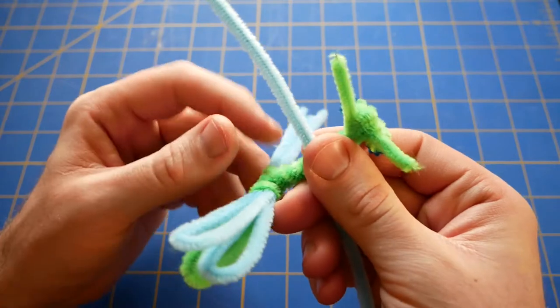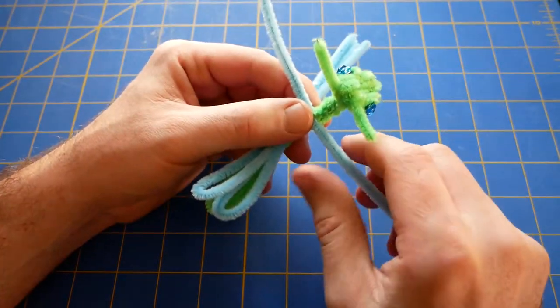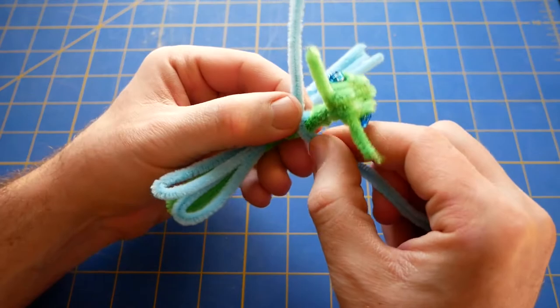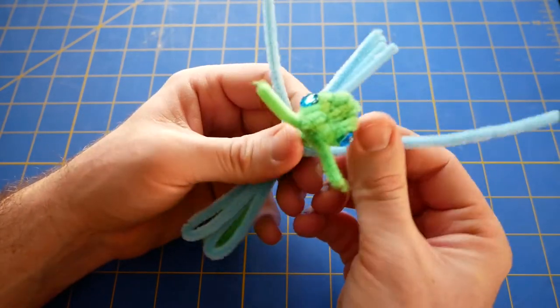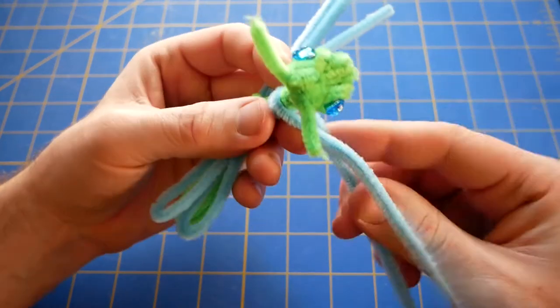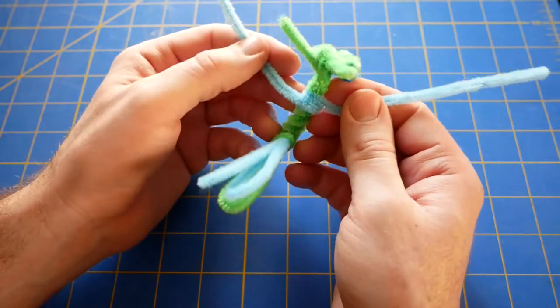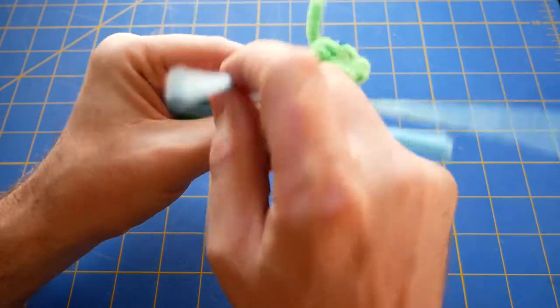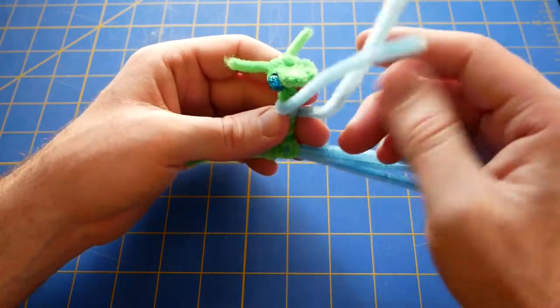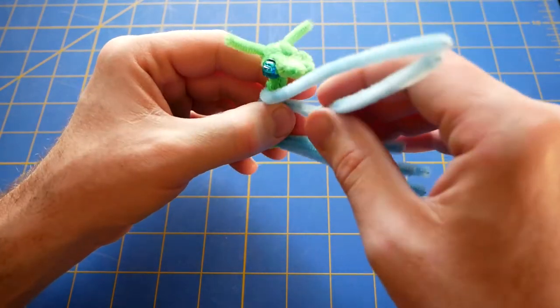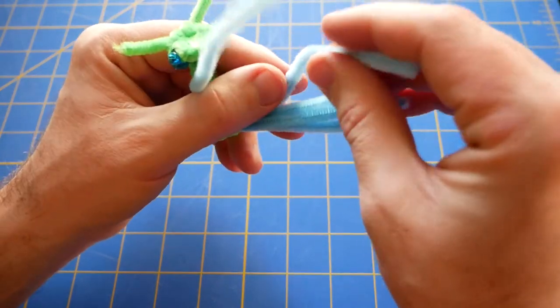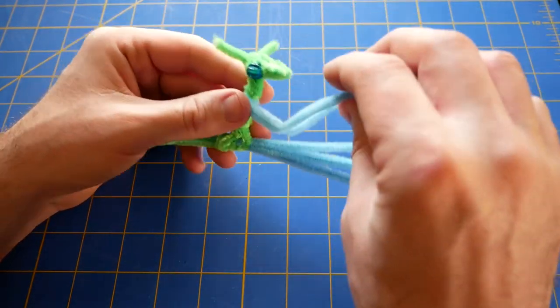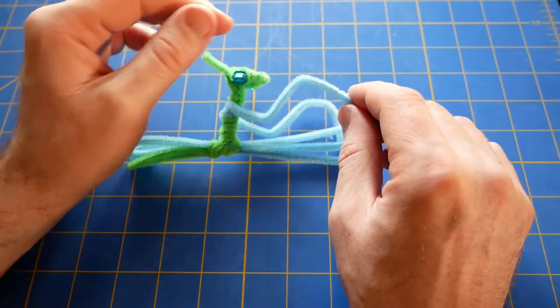Then with a new pipe cleaner, come around the middle and wrap the pipe cleaner twice around the middle and once with the other side. Then take the arm and you're gonna make the shape of the praying mantis arms like that.